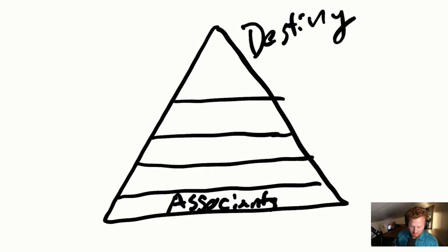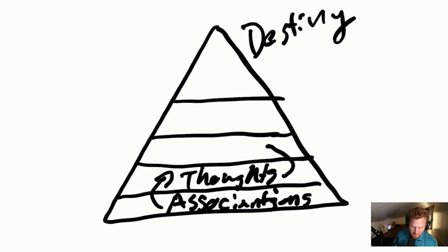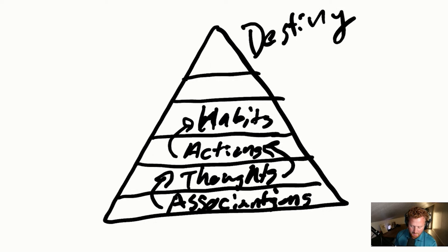So associations are things like things that we listen to, the people that we hang out with, the things that we watch, the things that we read - all those things are associations because those associations will lead into our thoughts, and then those thoughts will lead into our actions, and then those actions will lead into our habits, and then our habits will lead into our character, and then the character will lead into our destiny of what we are trying to achieve.